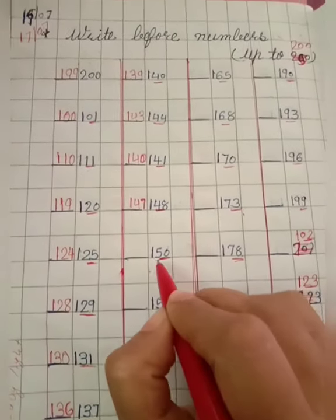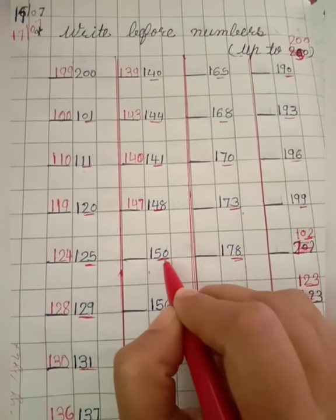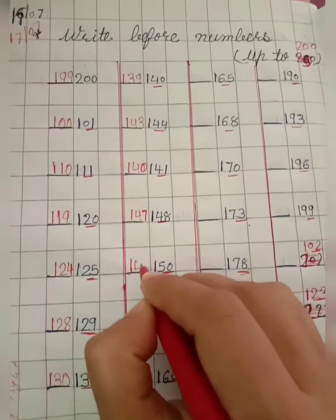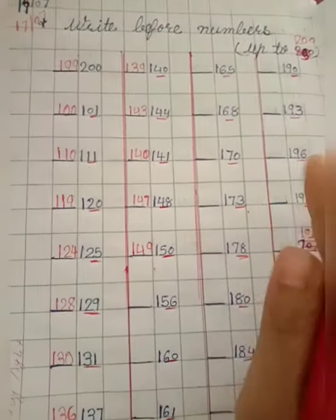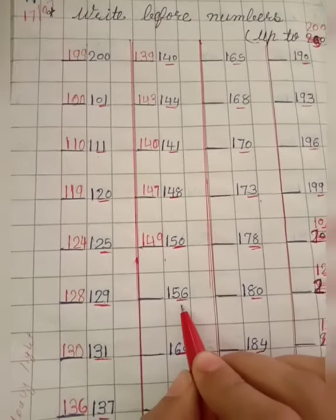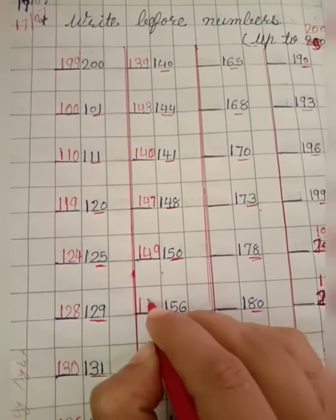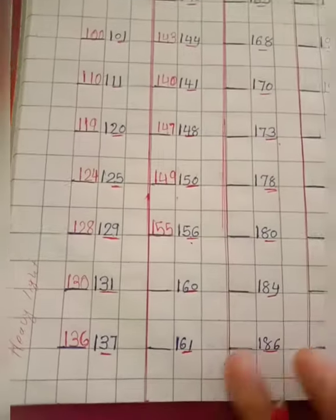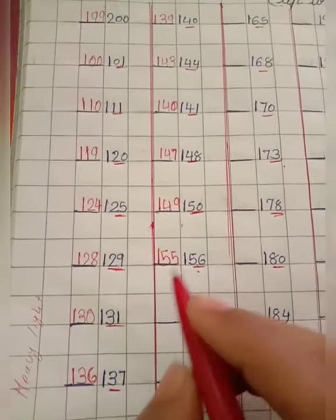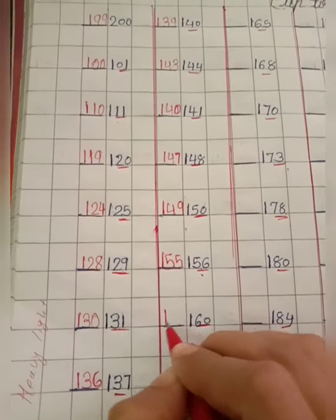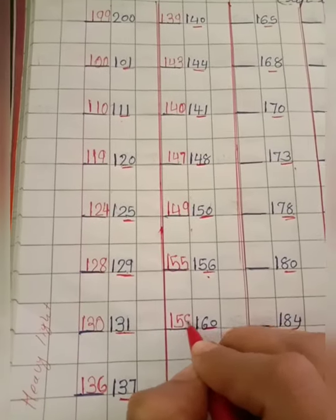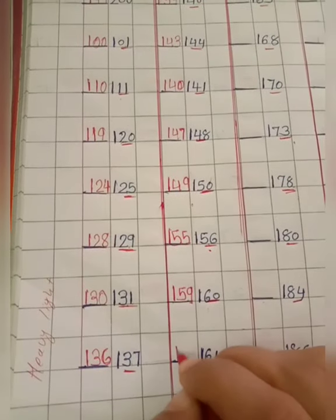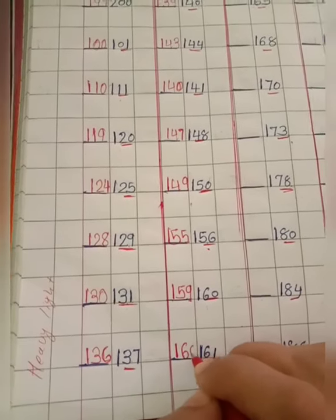Let's start for the work. 150, the last two digits here we have to do. 50, 50 before 49, so we will write 149. 56, 56 before 55, so we will write 155. 160, 60 before 59, so we will write 159. 61, 61 before 60, so we will write 160.